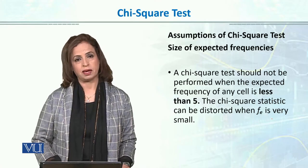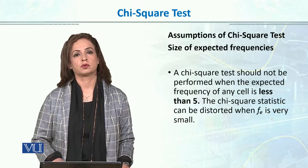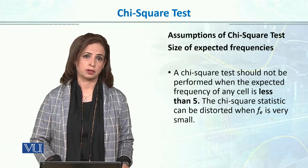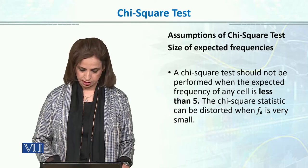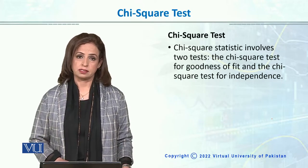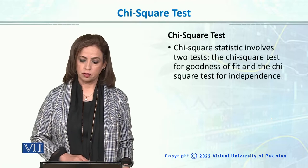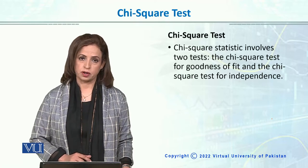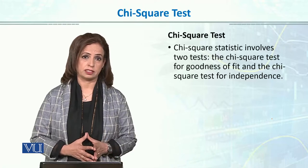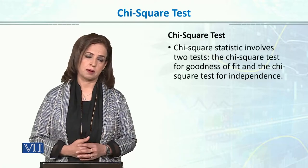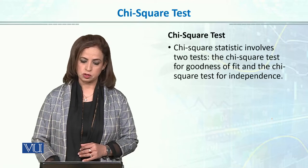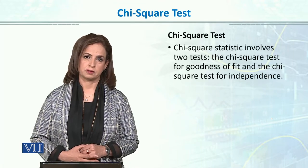If the frequency is less than 5, then our results can be somewhat misleading or slightly exaggerated. Chi-square statistics involve two tests: the chi-square test for goodness of fit, and the chi-square test of independence. We will talk about both of these in the next module.